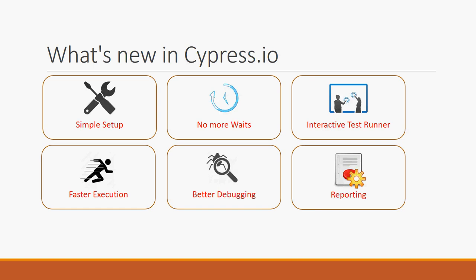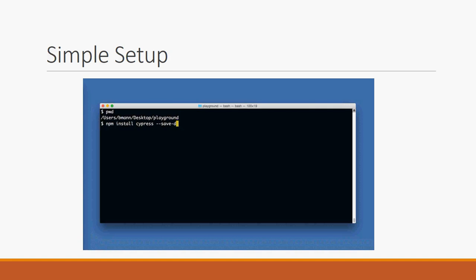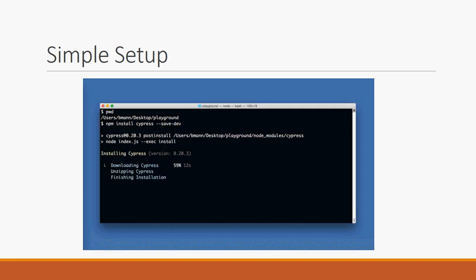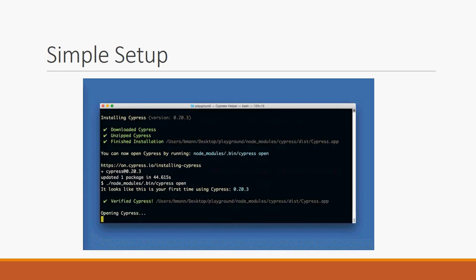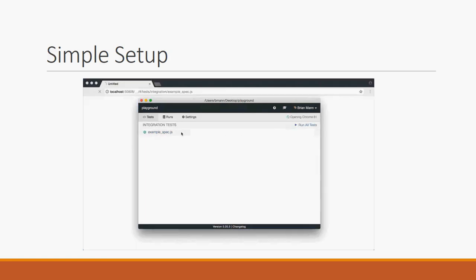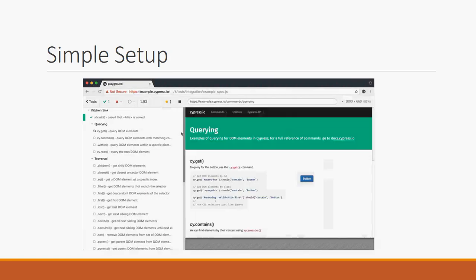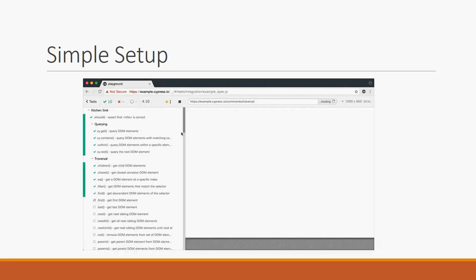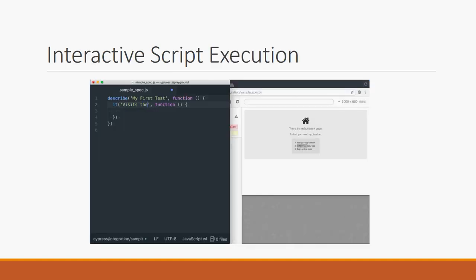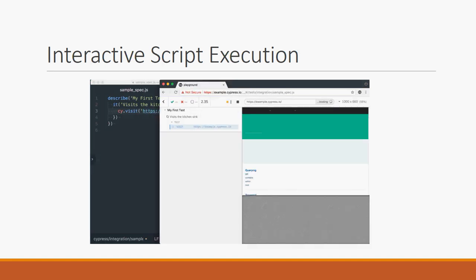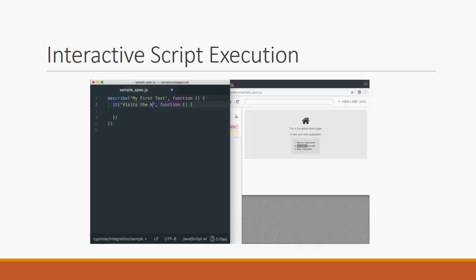All of these features come in one package provided by the Cypress.io solution. It's very easy to install and download Cypress, and once you create your scripts you can execute them right away. Interactive script execution means that once you write a Cypress script and save it, it starts executing automatically — you don't have to run it separately.